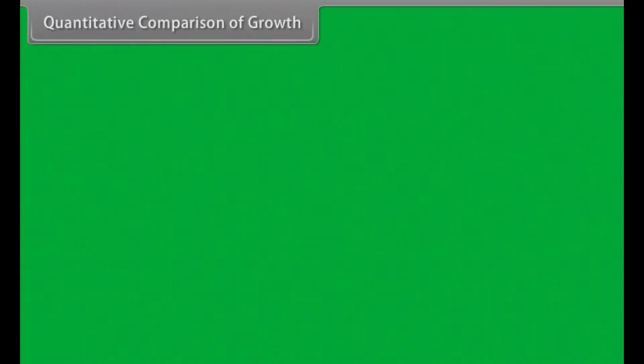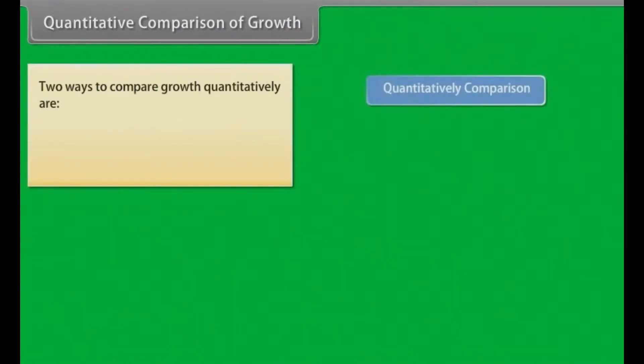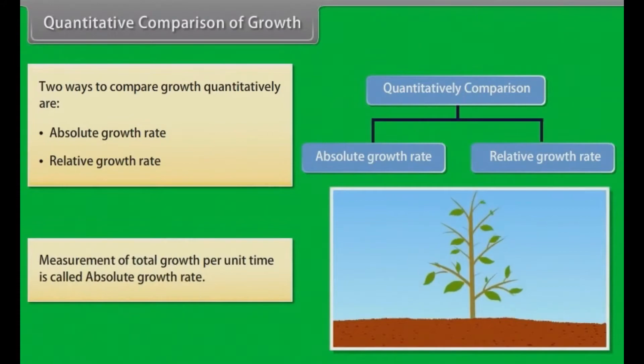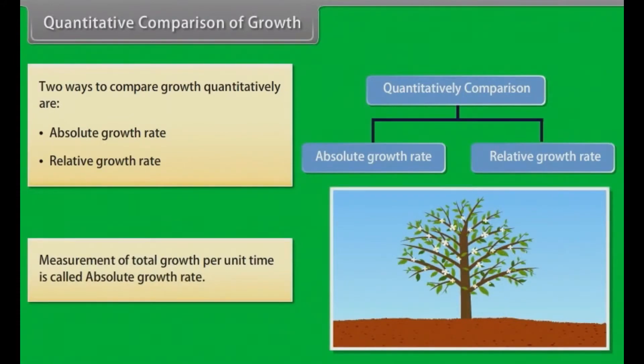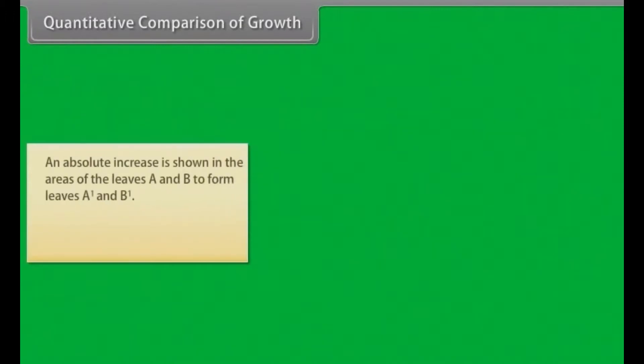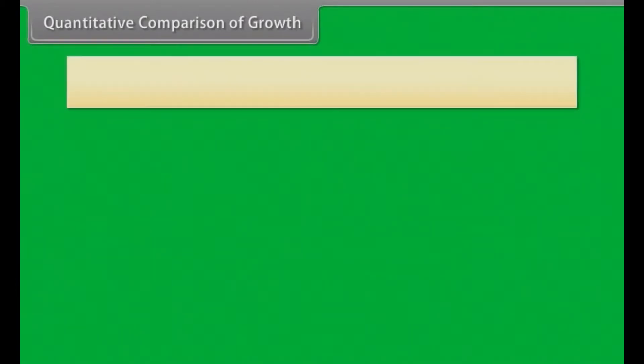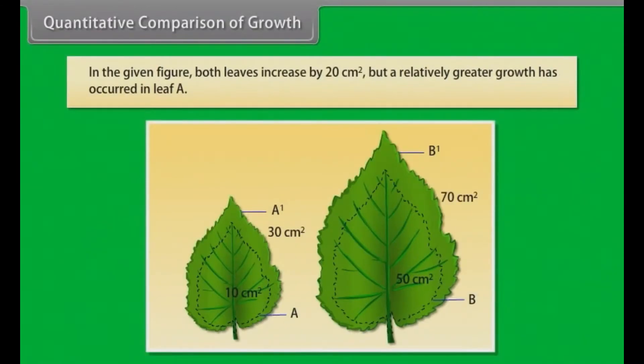Quantitative comparison of growth. Two ways to compare growth quantitatively are absolute growth rate and relative growth rate. Measurement of total growth per unit time is called absolute growth rate. An absolute increase is shown in the areas of leaves A and B to form leaves A1 and B1. Growth of given system per unit time is called relative growth rate. In the given figure, both leaves increase by 20 cm², but a relatively greater growth has occurred in leaf A.